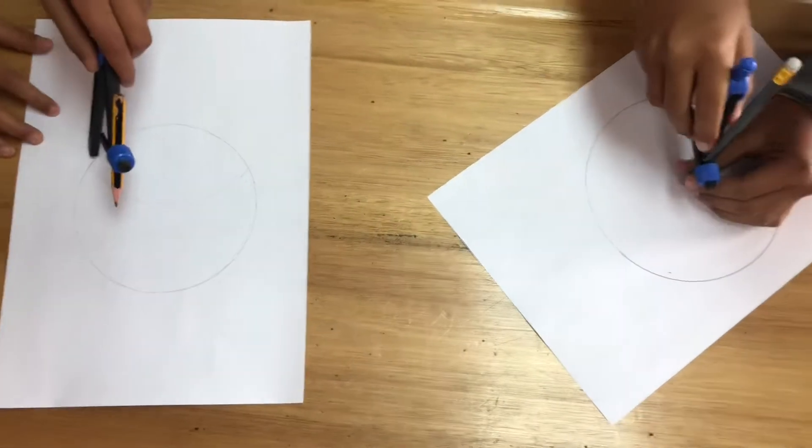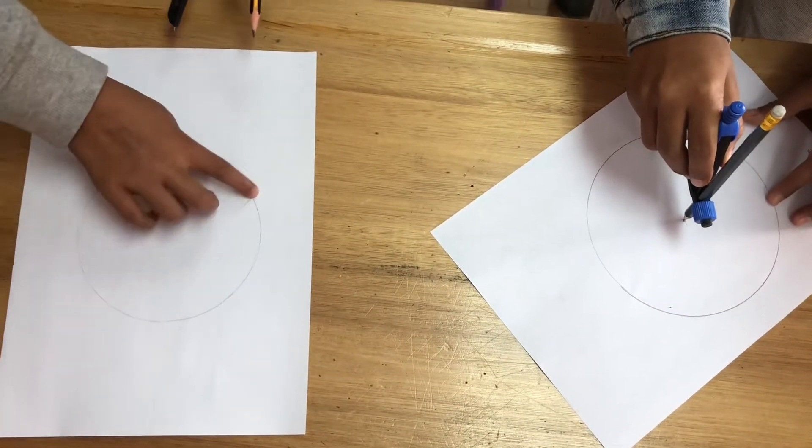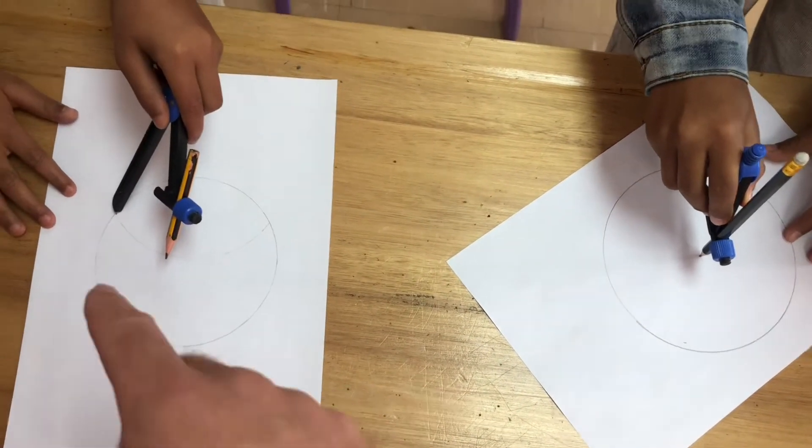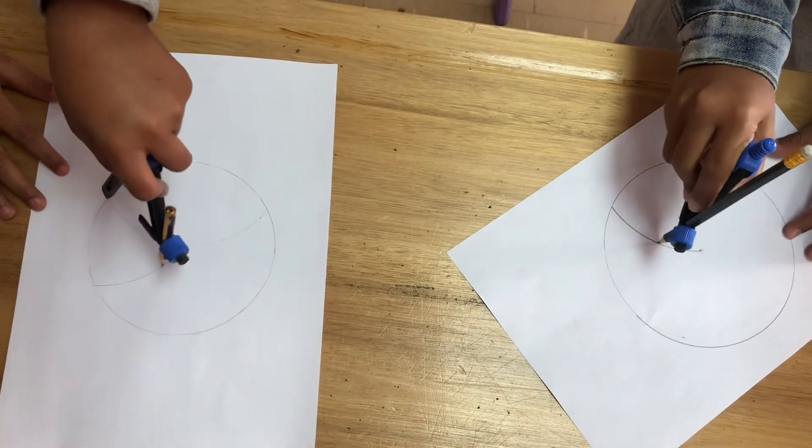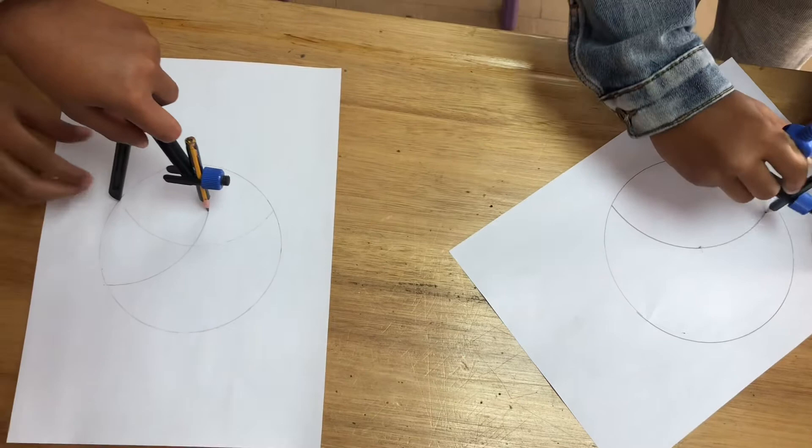And then you choose another point, like from the arc. So you move your point to the edge of the arc where it meets the circumference. And then you draw another line going through the center. Okay.